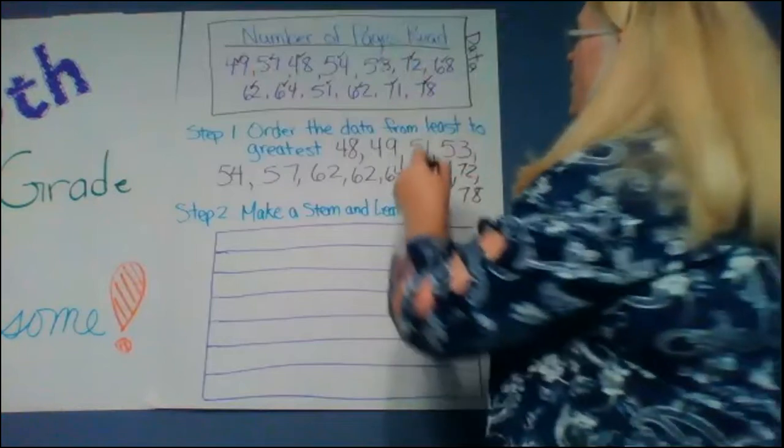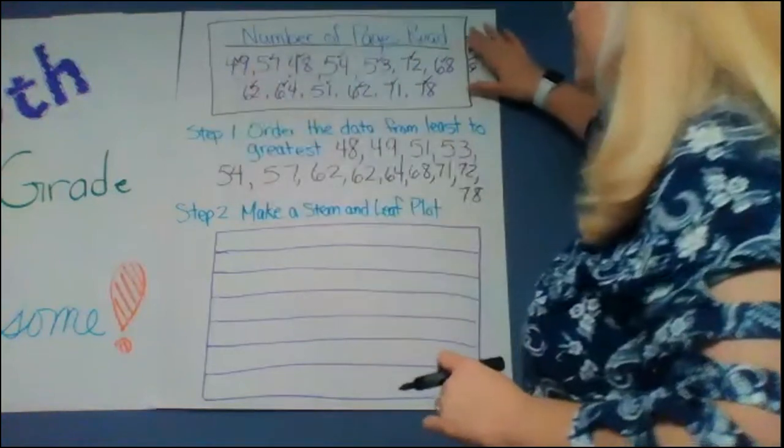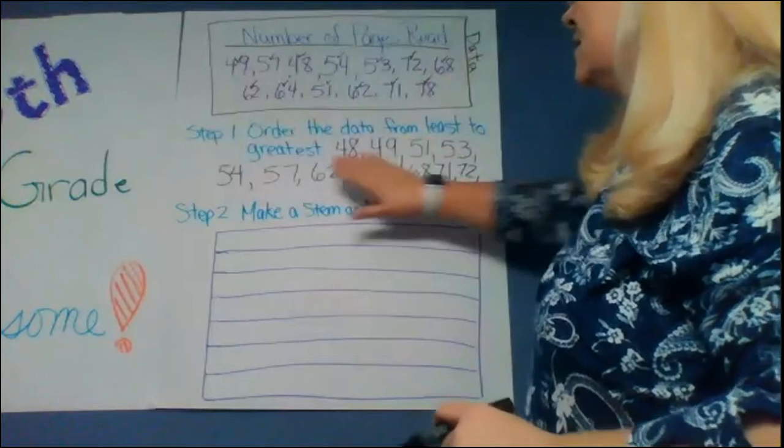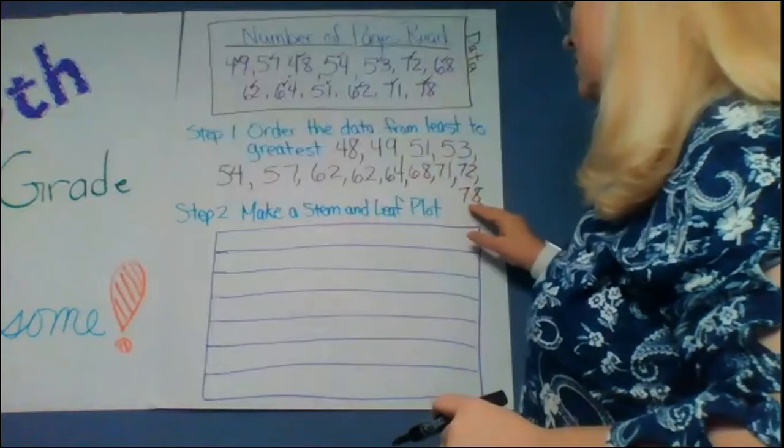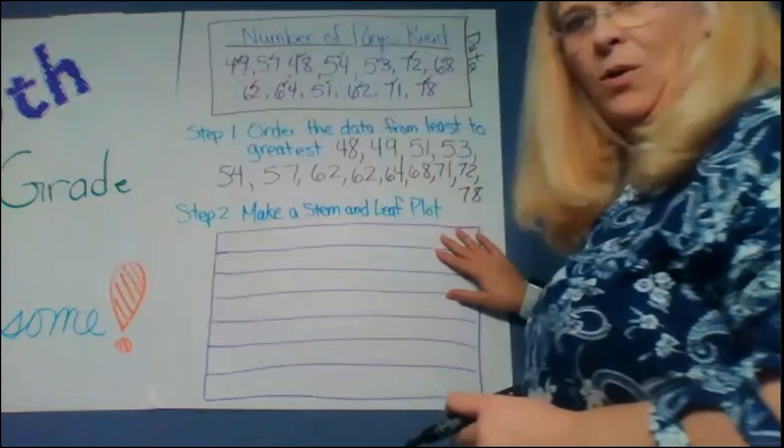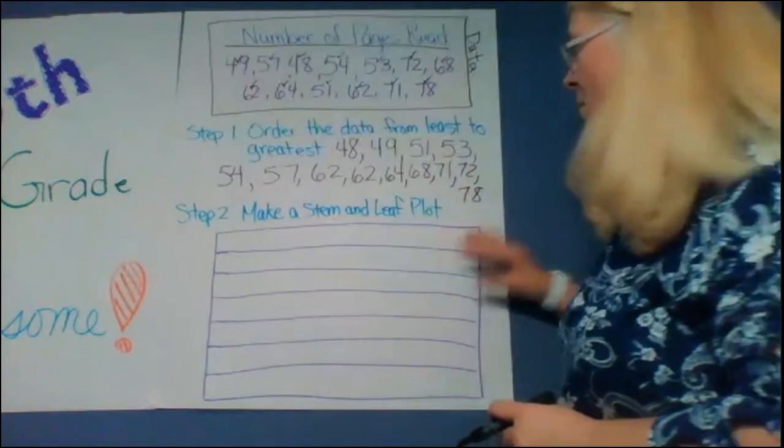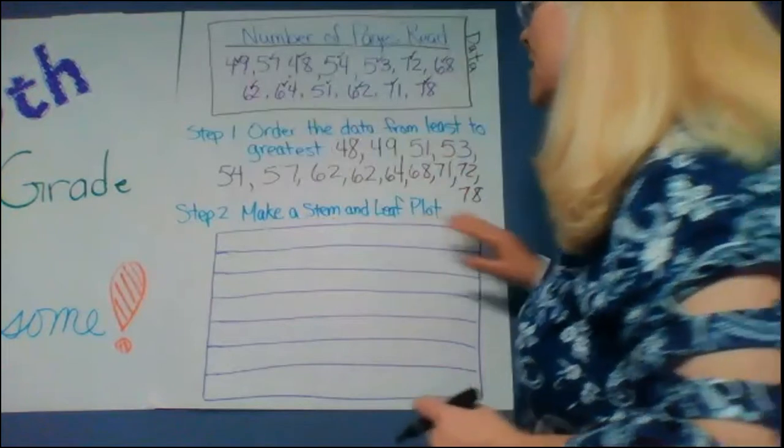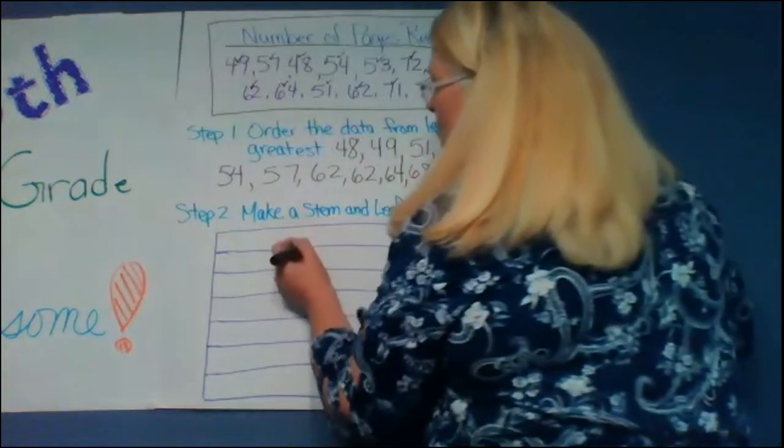All right so I have all of my data listed lowest to highest. And then here is like if it was on my notebook paper and I'm going to make my stem and leaf plot and the first thing is to give it a title.